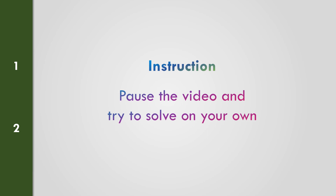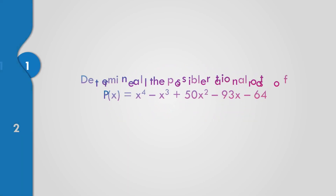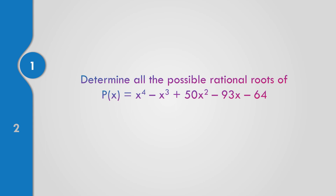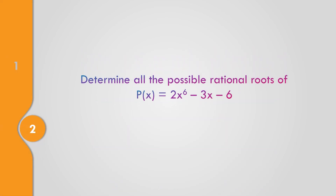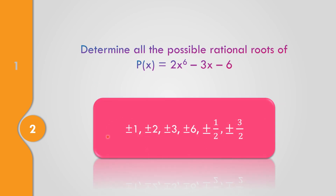Instruction: Pause the video and try to solve on your own. Question 1: Determine all the possible rational roots of p of x equal to x to the 4th minus x cubed plus 50x squared minus 93x minus 64. The answer is positive-negative 1, 2, 4, 8, 16, 32, and 64. Question 2: Determine all the possible rational roots of p of x equal to 2x to the 6th minus 3x minus 6. The answer is positive-negative 1, 2, 3, 6, positive-negative 1 half, and positive-negative 3 over 2.